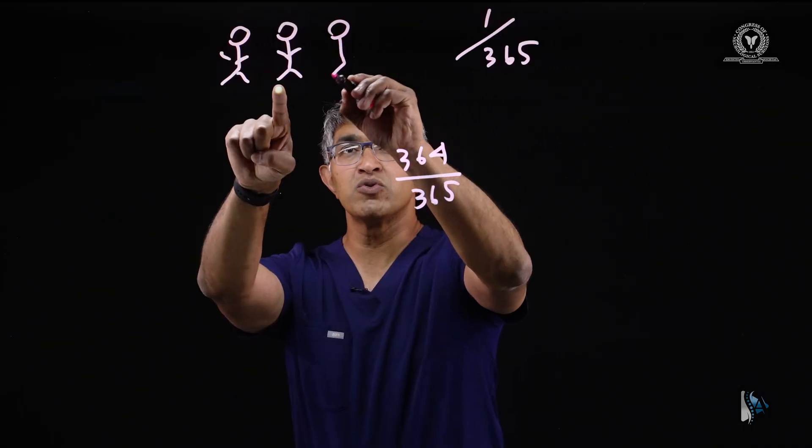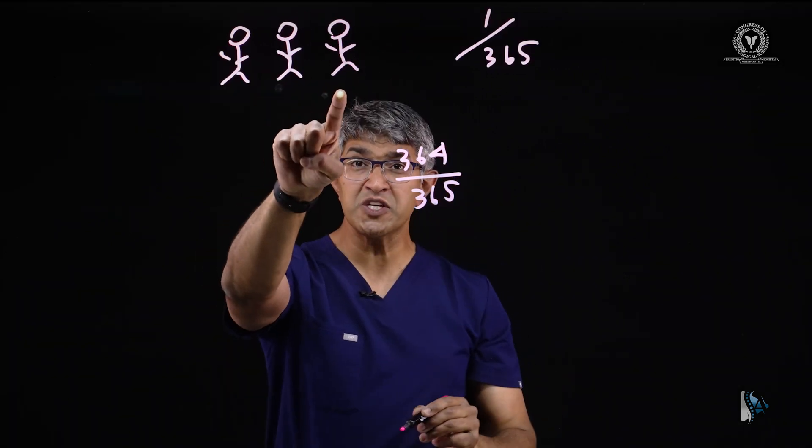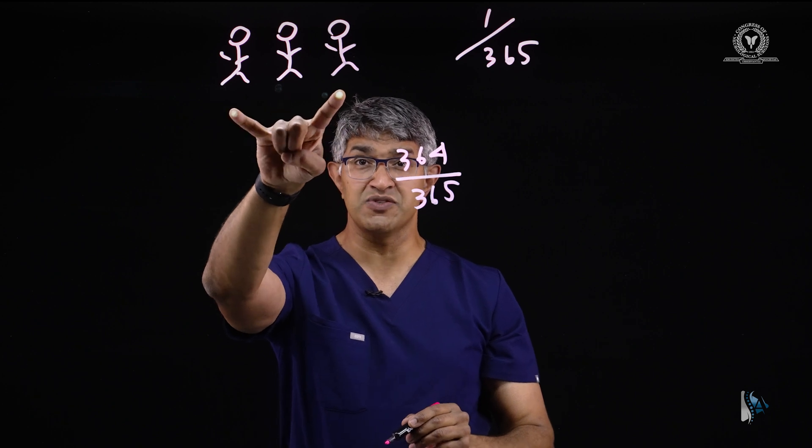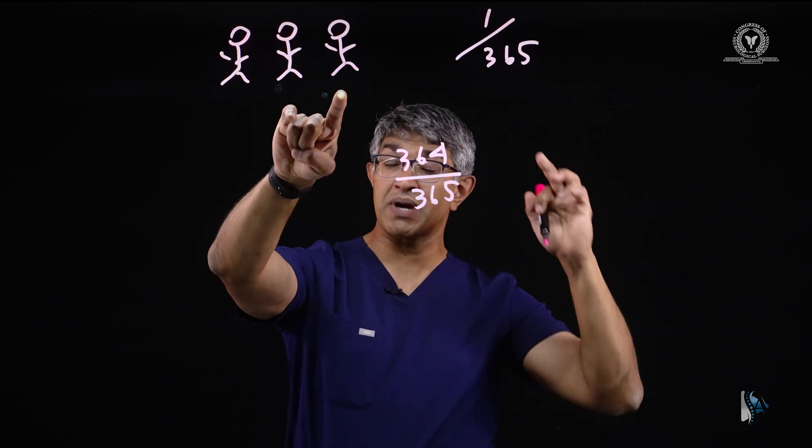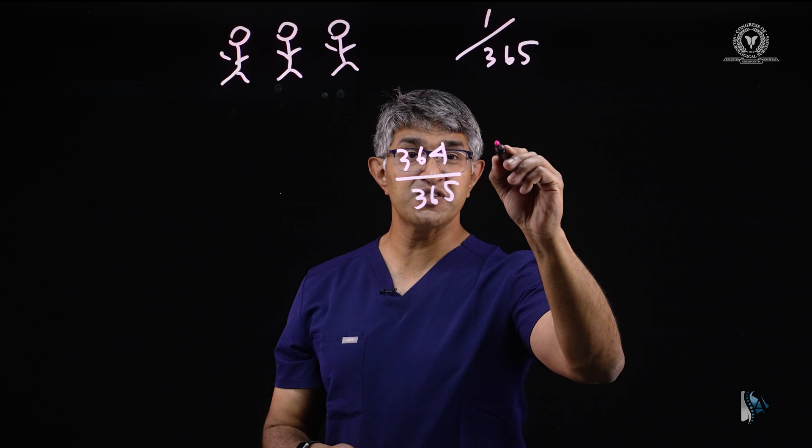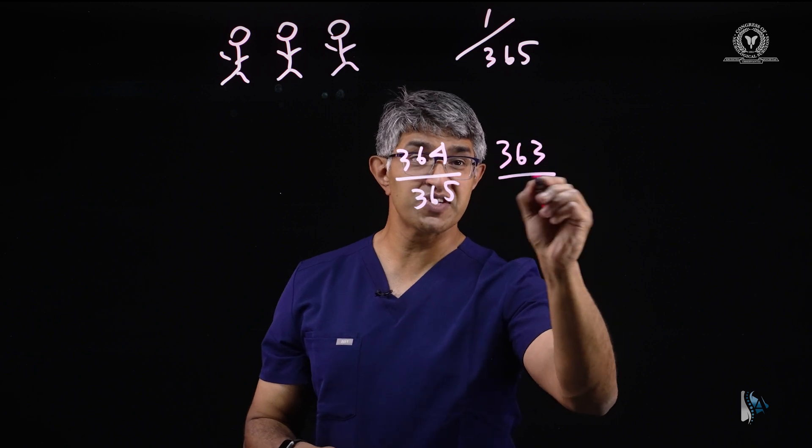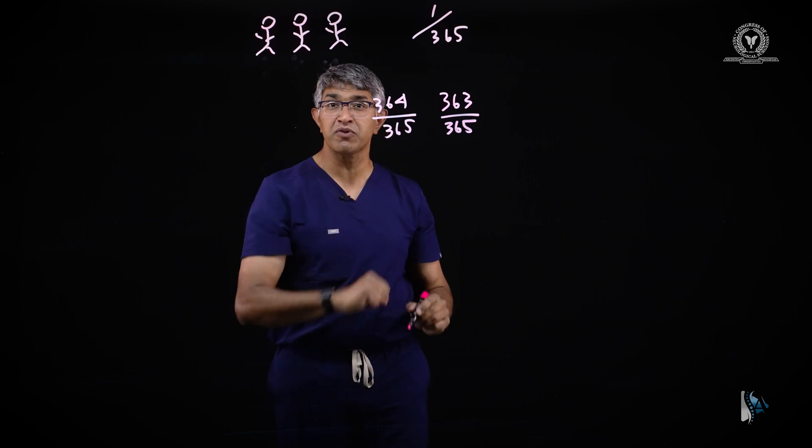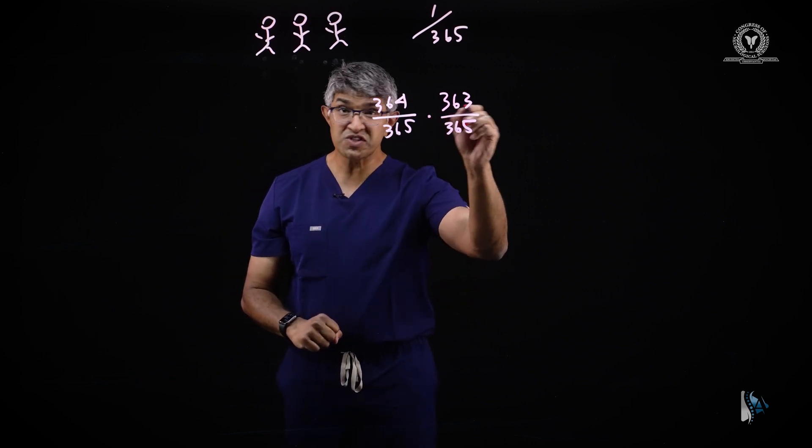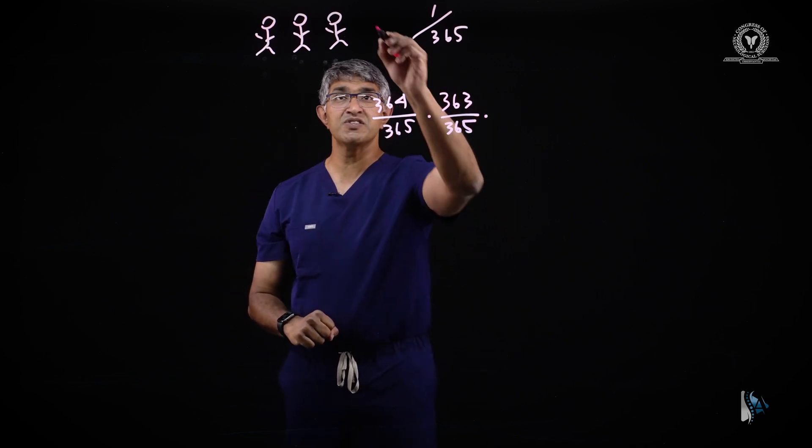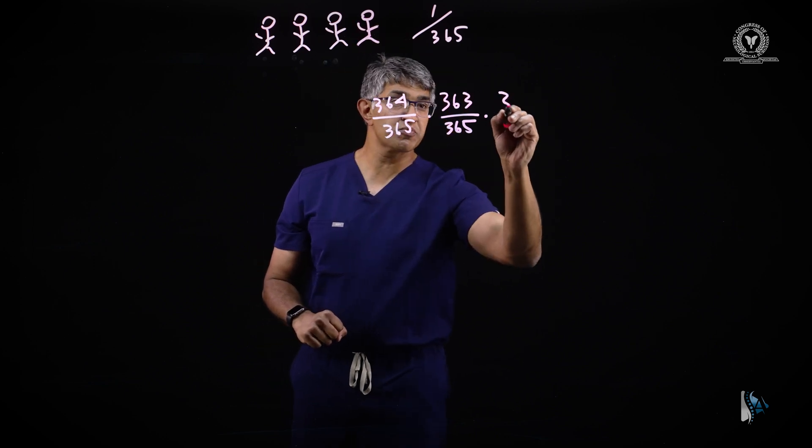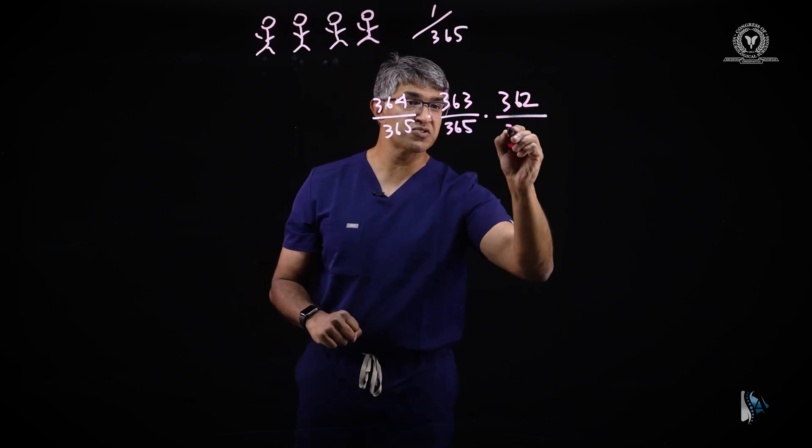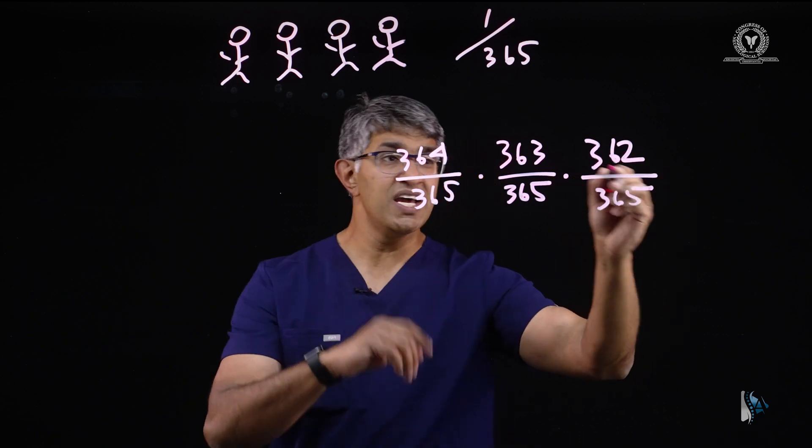But now imagine a third person walks into the room. What's the probability that this person has one of these birthdays? The probability that they do not is 363 over 365. In other words, you have to say one for this, one for this, you take both of them off. And this 363 over 365, obviously this continues. You can put another person here. The probability that this next person has neither of those birthdays is 362 over 365, etc. And this is how the math is done.